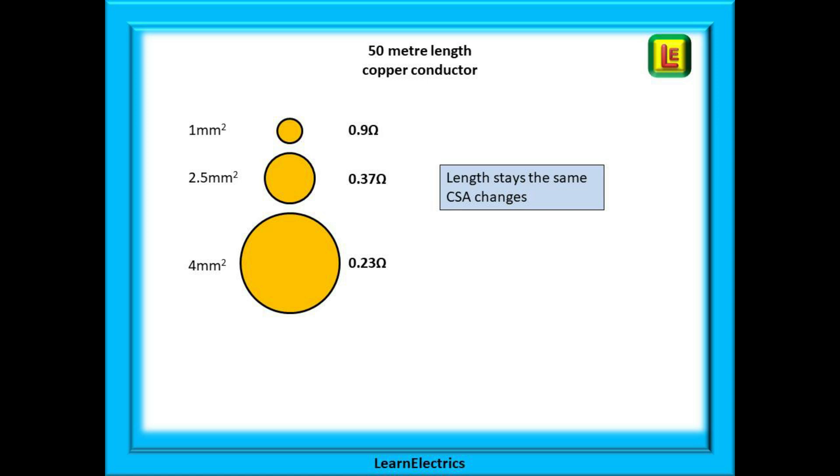It is easier for electrons to move through the wire, and here it has fallen to 0.37 ohms. And the same length of four millimeter cable will give a resistance of just 0.23 ohms, smaller still. It is important that you understand this concept. What happens to resistance when cable lengths or cable sizes change?